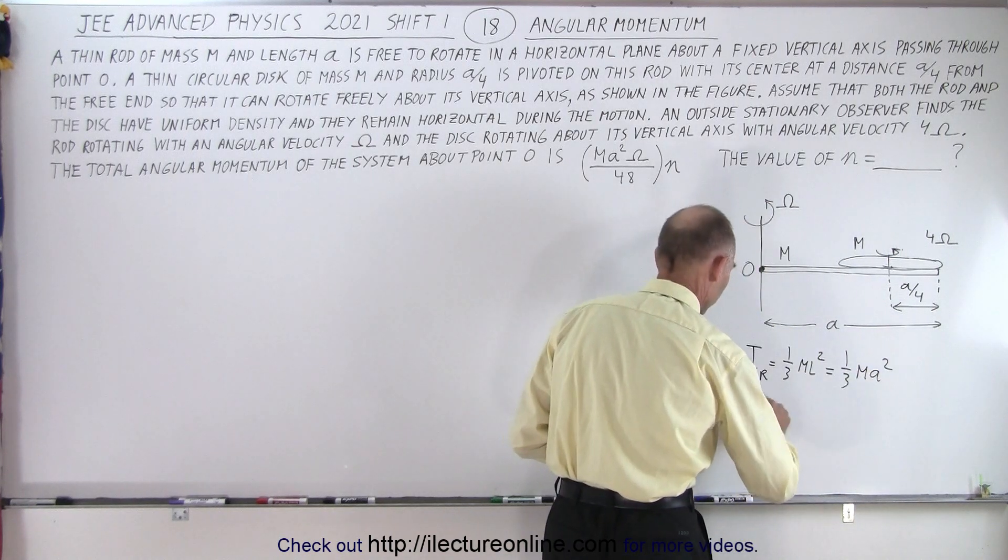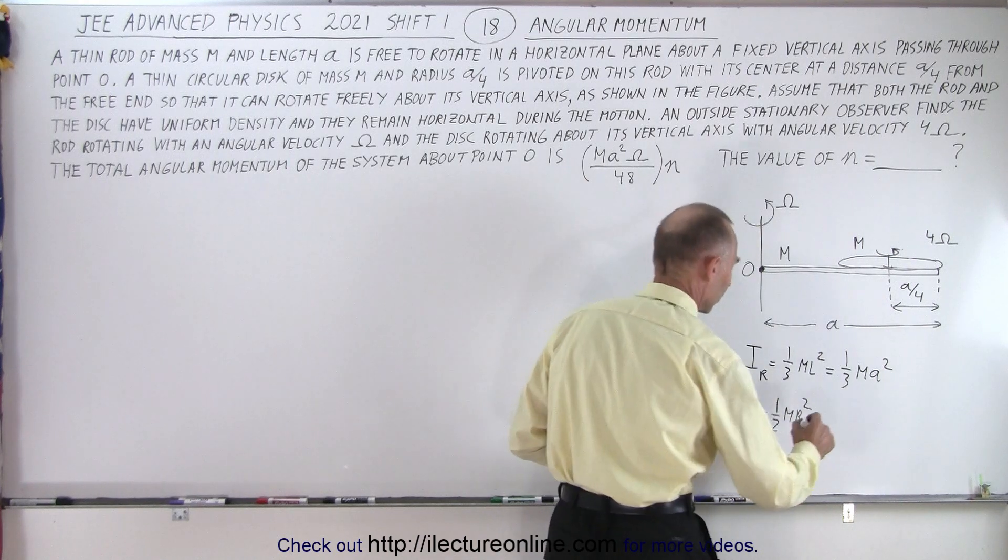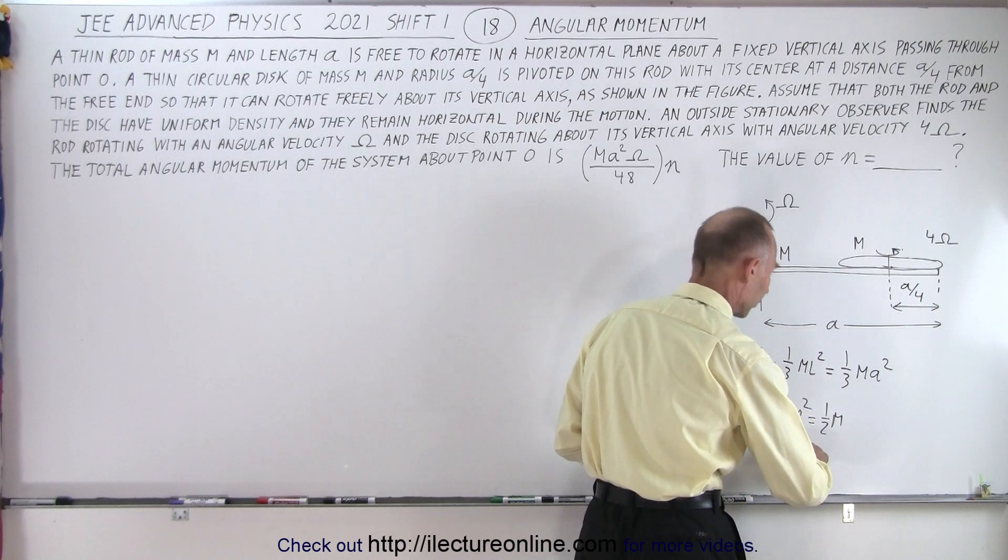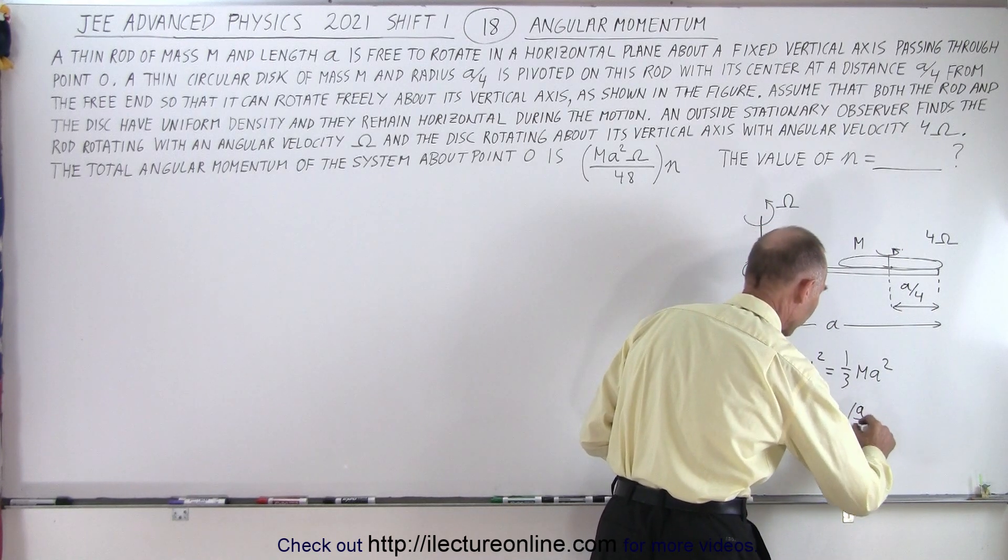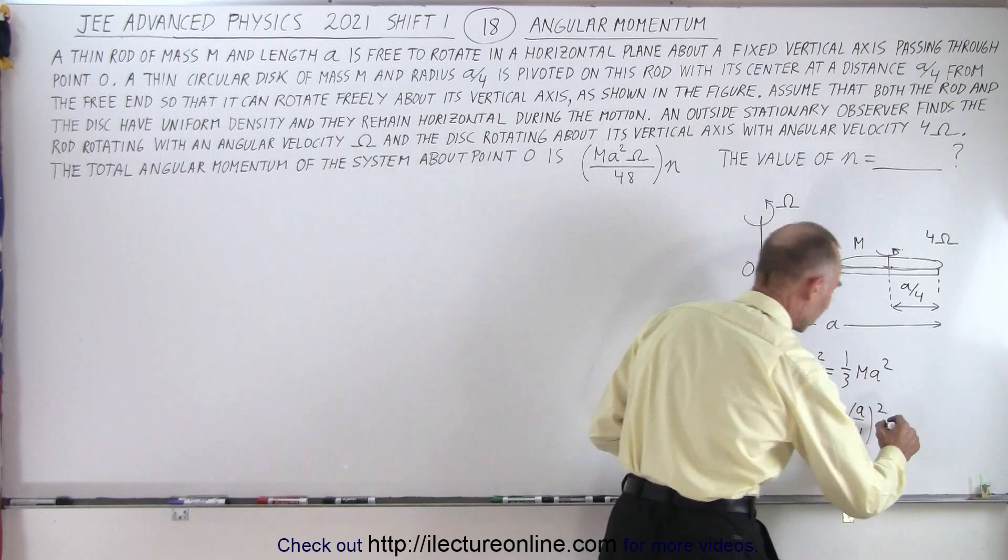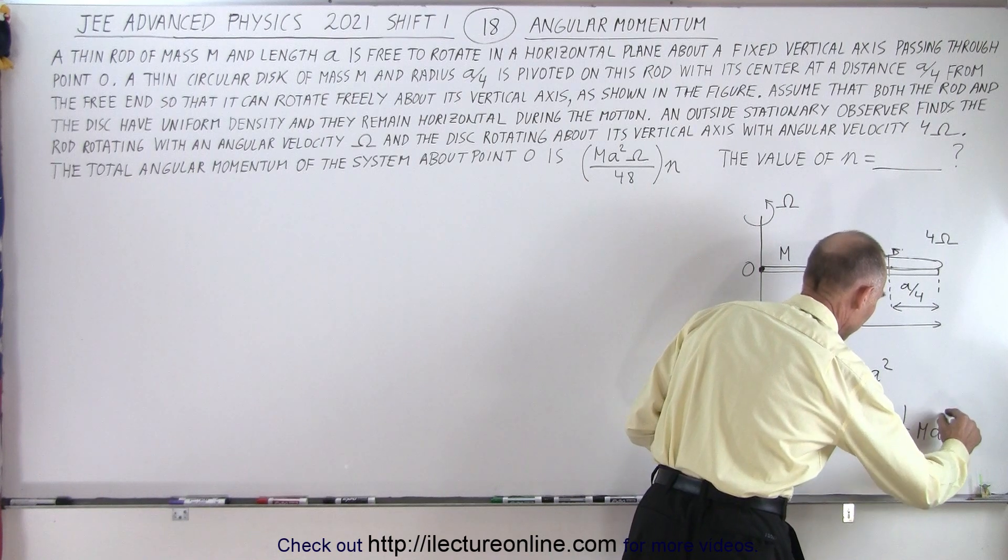The moment of inertia of the disk is equal to 1 half the mass times the radius squared. So in this case, that's equal to 1 half m and the radius is a over 4 so it would be a over 4 squared. That would be 16 times 2. That would be equal to 1 over 32 m a squared.